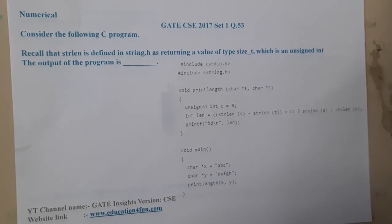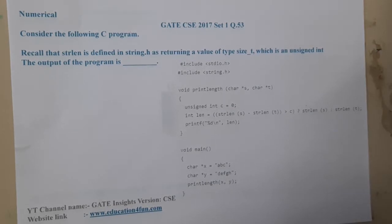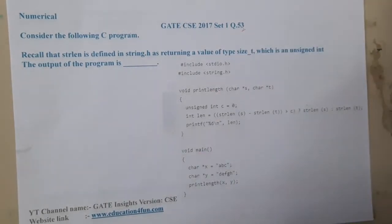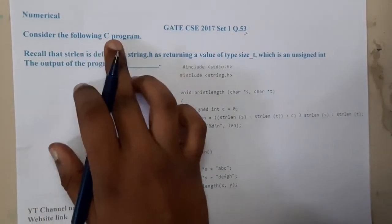Hello guys, we are back with our next lecture. In this lecture, let us go through the next question. This question belongs to GATE CSE 2017 Set 1, Question 53. The question is: consider the following C code.